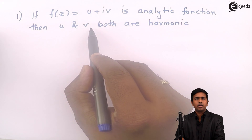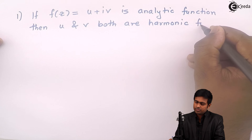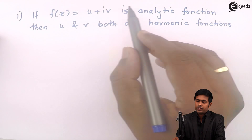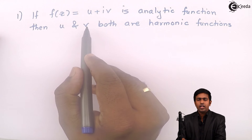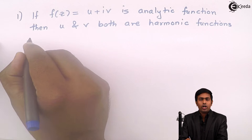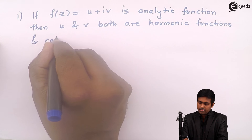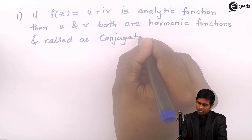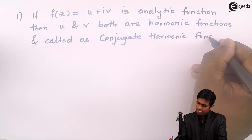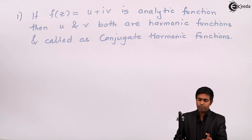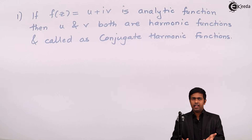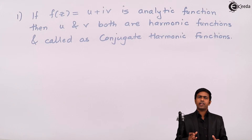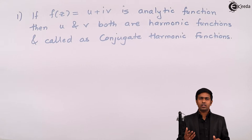Whenever a function is analytic, the real part and imaginary part are harmonic functions. If f(z) is an analytic function, then u and v are harmonic and they are also called conjugate harmonic functions.